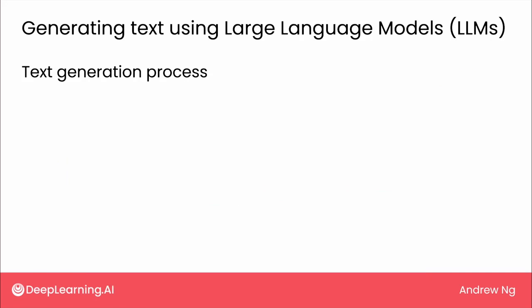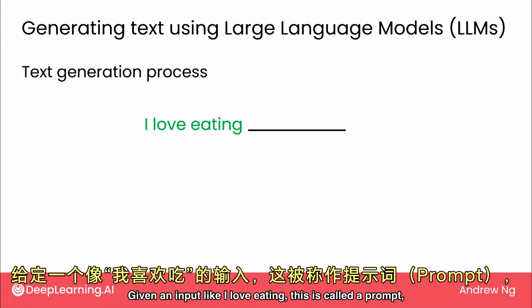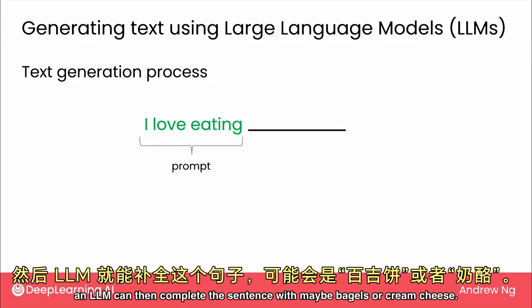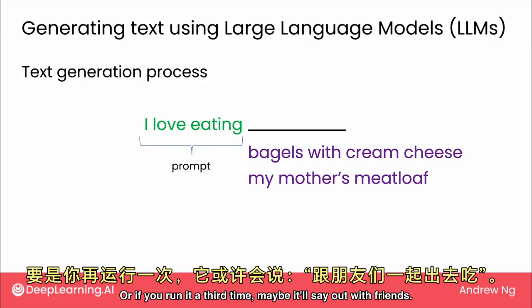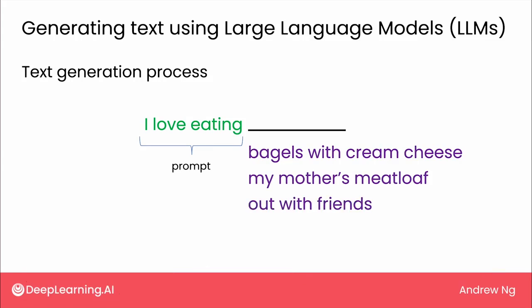Given an input like 'I love eating' — this is called a prompt — an LLM can then complete the sentence with maybe 'bagels with cream cheese.' Or if you run it a second time, it might say 'my mother's meatloaf.' Or if you run it a third time, maybe it'll say 'out with friends.'